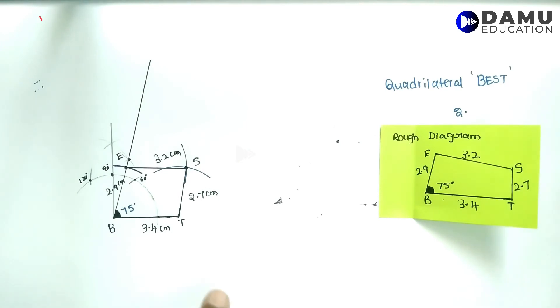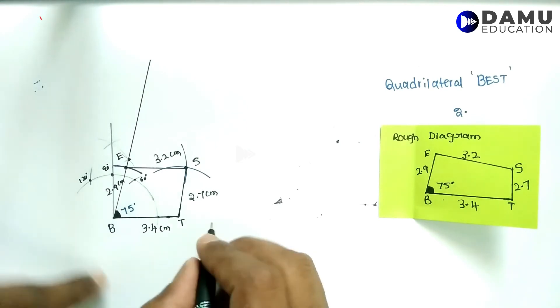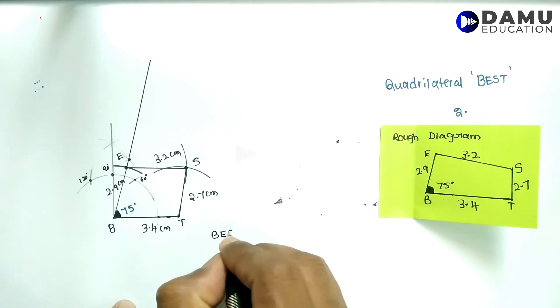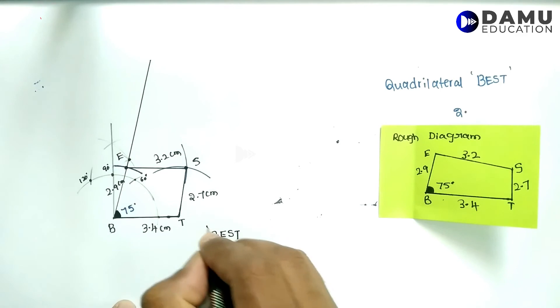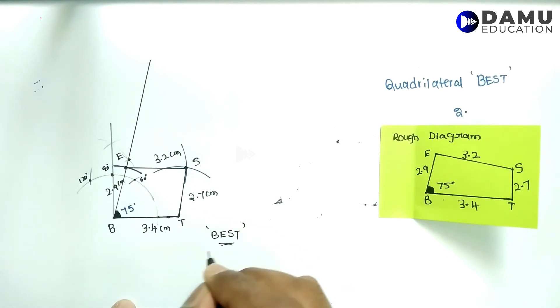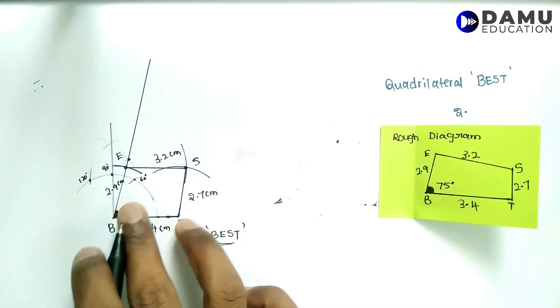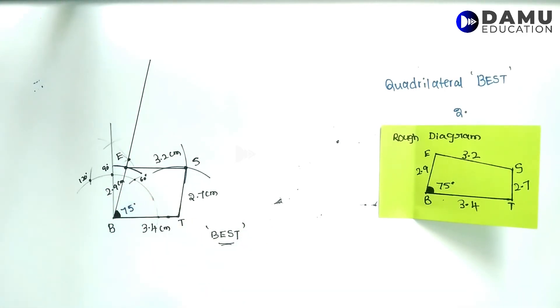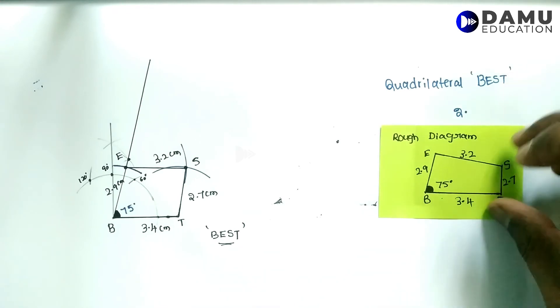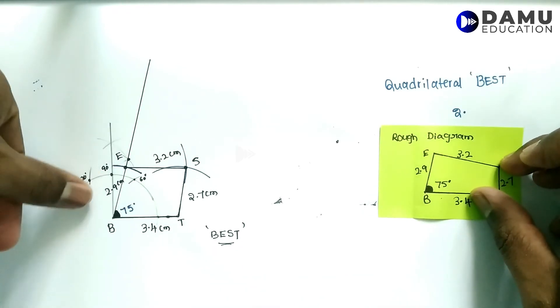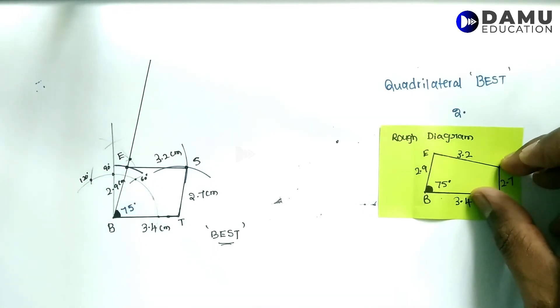We have constructed the quadrilateral B, E, S, T. This is the way to construct it using all the given measurements. This is the rough diagram and this is the actual sketch.